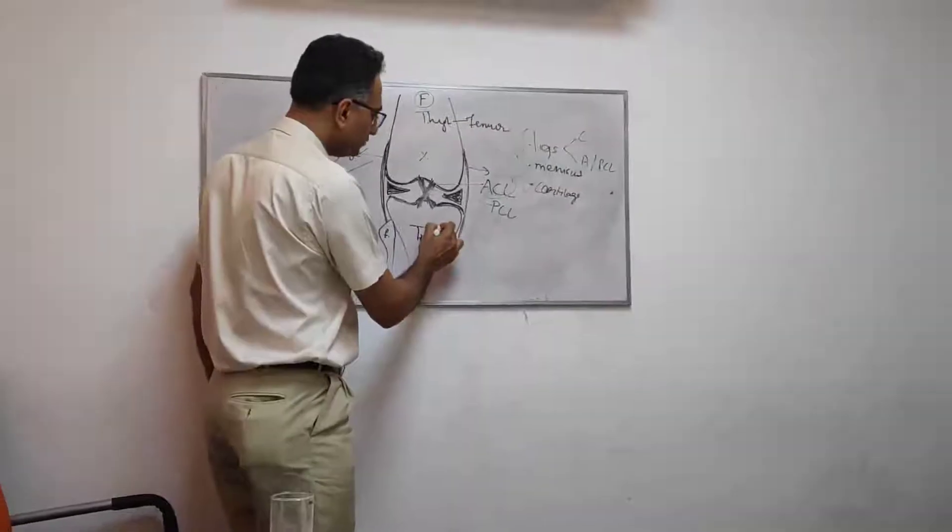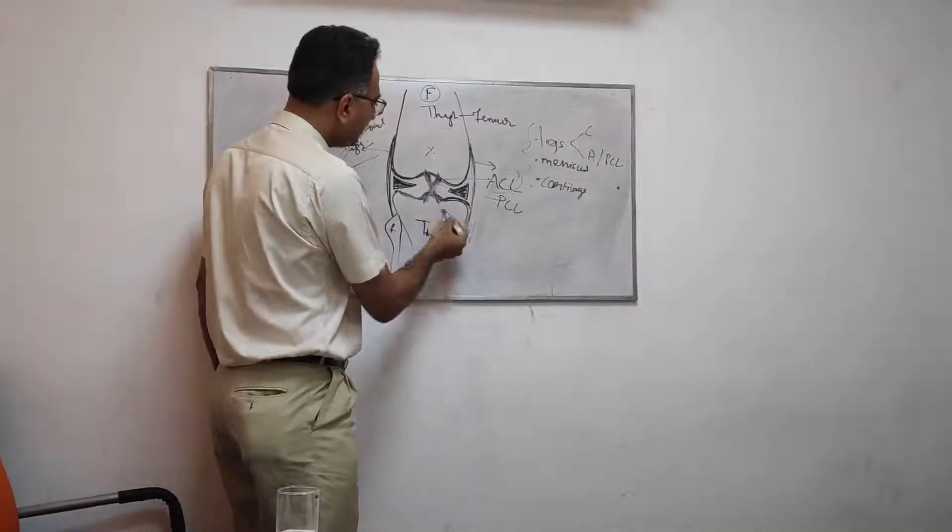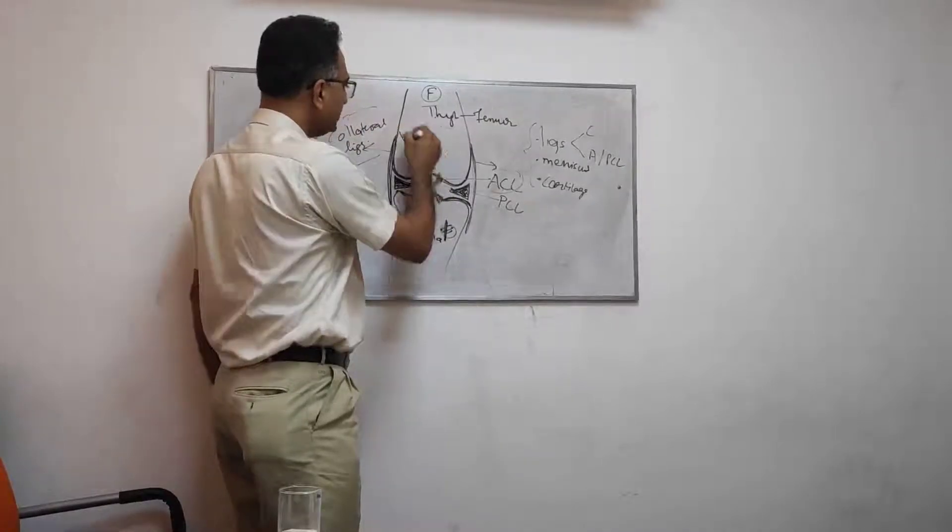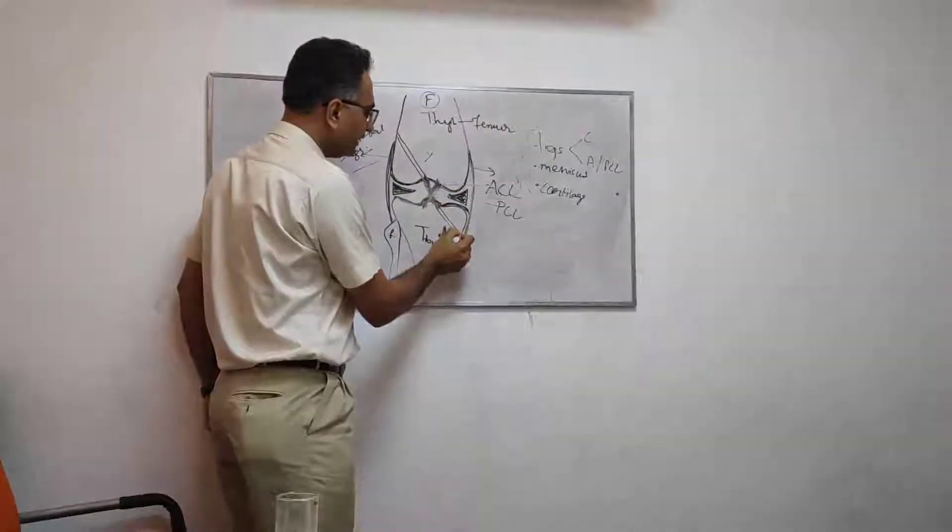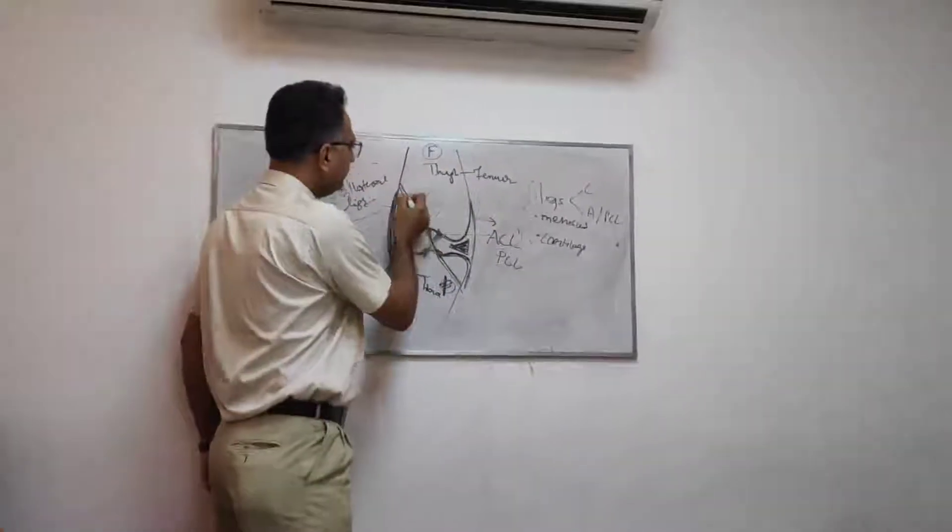You take a graft of that tibia by giving a small incision here, and then you pass the graft by making bone tunnels into the femur and bone tunnel into the tibia. It's like passing the graft from one end, going inside the knee and coming out here.